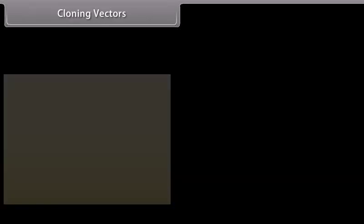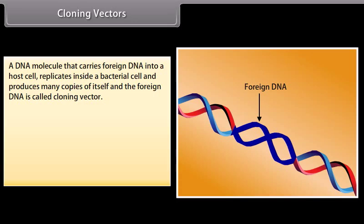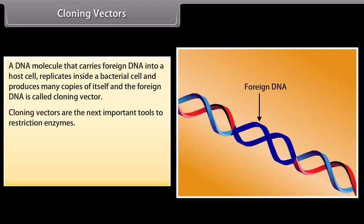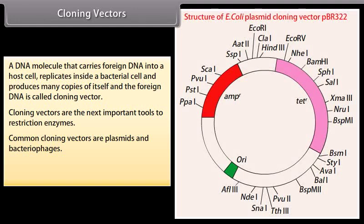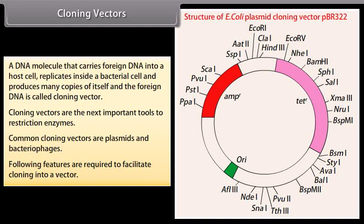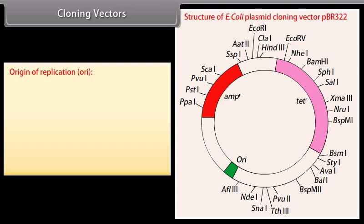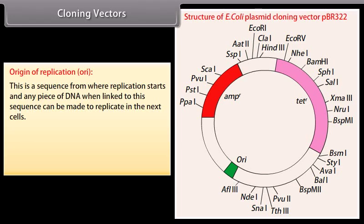Cloning vectors. A DNA molecule that carries foreign DNA into a host cell, replicates inside a bacterial cell, and produces many copies of itself and the foreign DNA is called a cloning vector. Cloning vectors are the next important tools after restriction enzymes. Common cloning vectors are plasmids and bacteriophages. Following features are required to facilitate cloning into a vector: origin of replication — a sequence from where replication starts; any piece of DNA linked to this sequence can be made to replicate in the host cells.